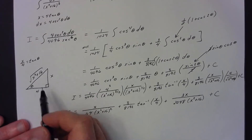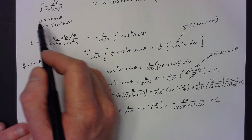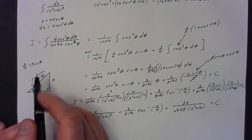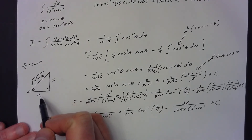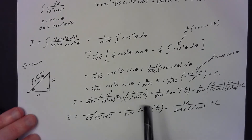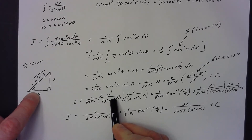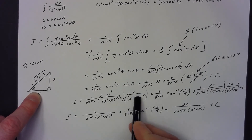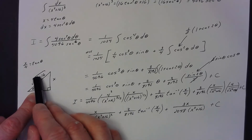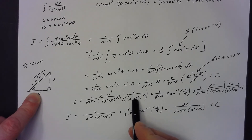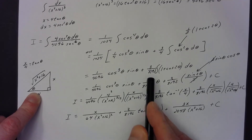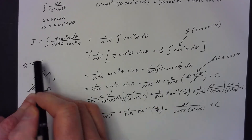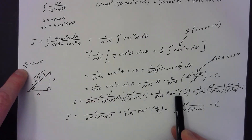For the evaluation, I constructed the trig triangle knowing x/4 = tan θ. So the opposite side is x, the adjacent side is 4, and the hypotenuse is √(x² + 16). Cos³ θ is (adjacent/hypotenuse)³ = 4³ / (x² + 16)^(3/2). Times sin θ, which is opposite over hypotenuse: x / (x² + 16)^(1/2). Then θ = arctan(x/4).